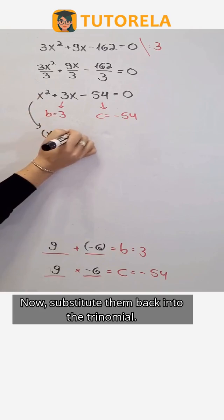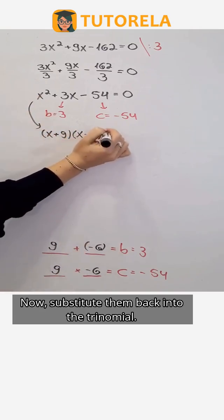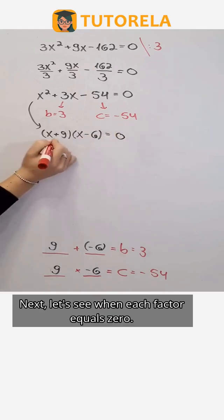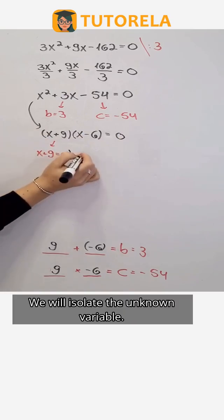Now, substitute them back into the trinomial. Next, let's see when each factor equals 0. We will isolate the unknown variable.